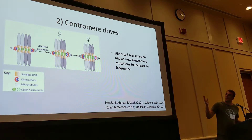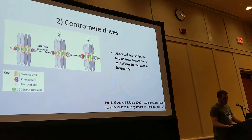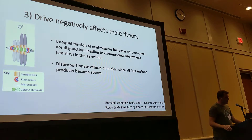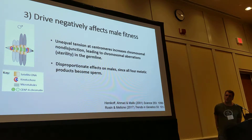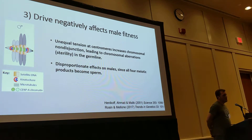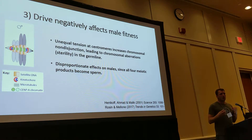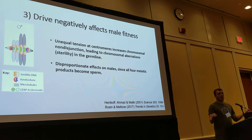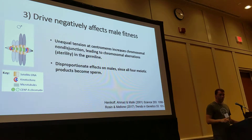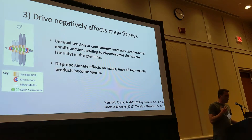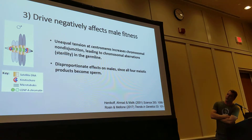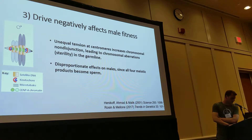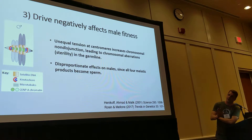The end result would be that you increase the strong centromere's frequency in the population. This is probably fine in the female germline for the most part, but it's problematic in the male germline, where all four meiotic products become sperm. You have this unequal tension process going on, which can lead to chromosomal non-disjunction and breakage. Those broken chromosomes make their way into the sperm, causing sterility.